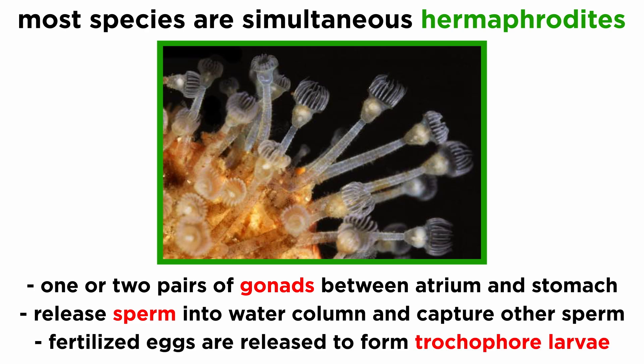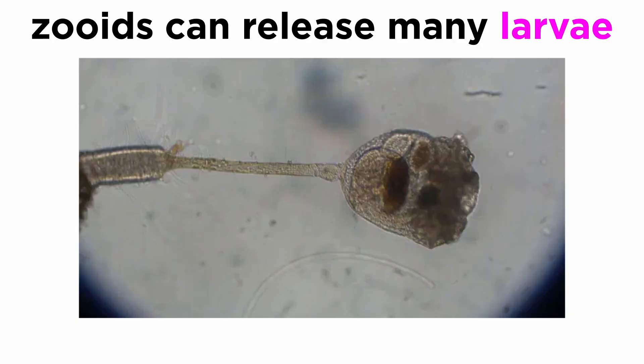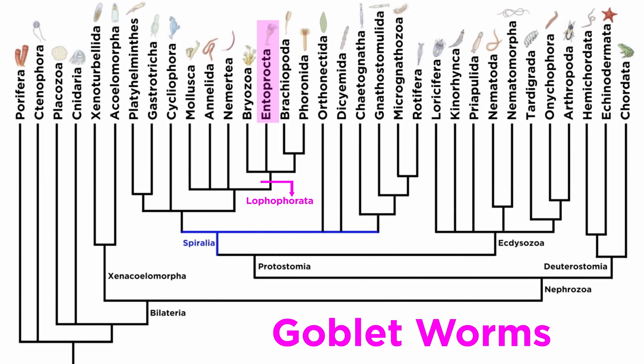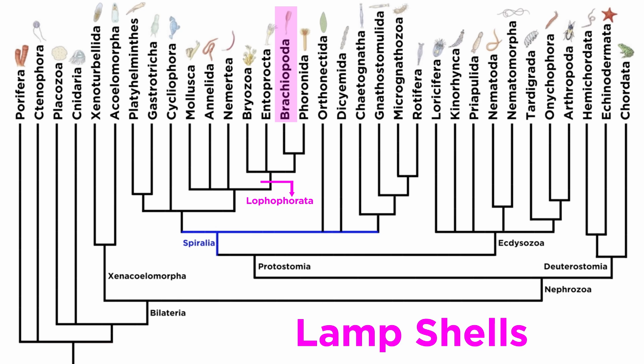Most species release eggs that hatch into a ciliated, free-swimming trochophore larvae, but others brood their eggs and nourish them until they swim freely. While an individual zooid is capable of releasing a large number of larvae, most do not survive to adulthood. However, larvae that are fortunate enough to settle onto suitable substratum will hold fast and metamorphose into an adult zooid. That covers the goblet worms. Let's move forward and examine a third phylum of Lophophorata, the lamp shells of Phylum Brachiopoda.